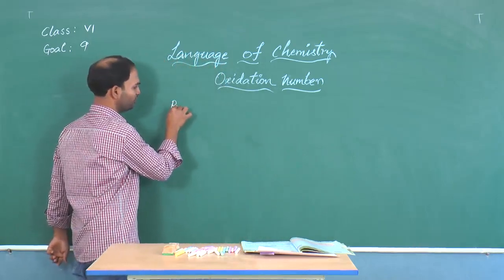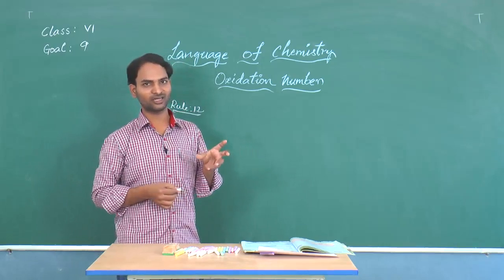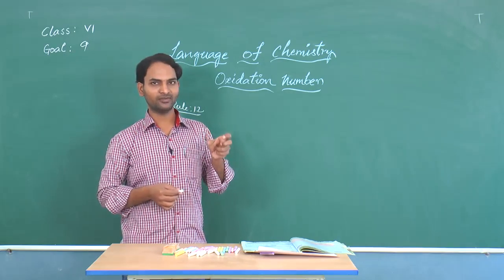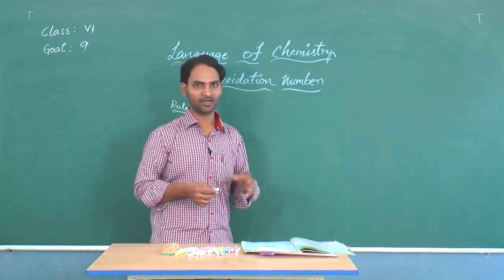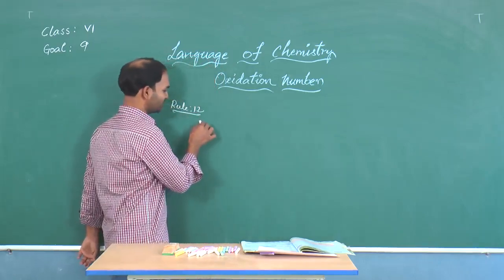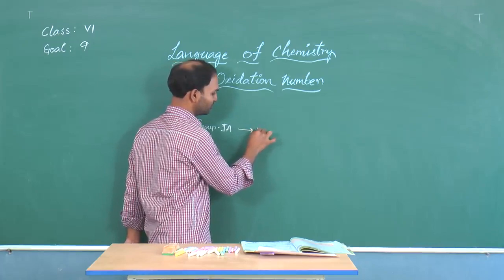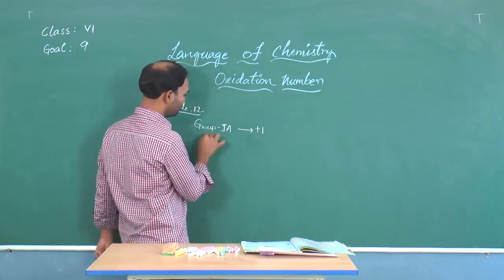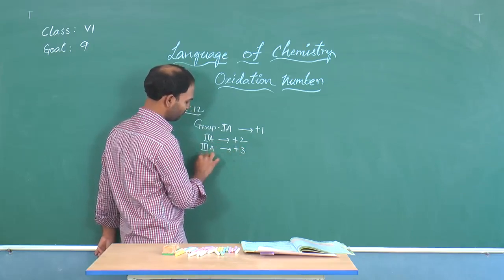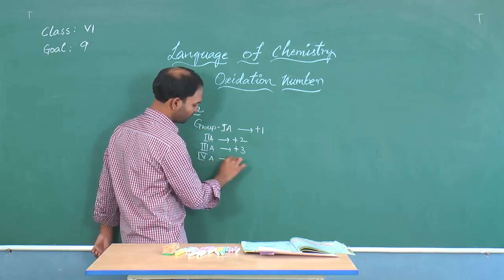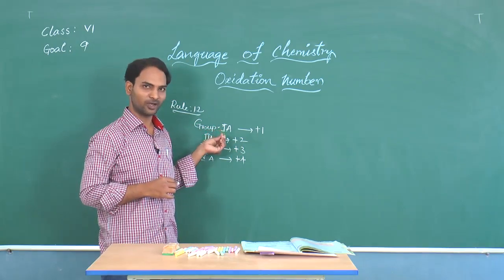In goal 9 we come across rule 12. Rule 12 states that the oxidation number for group elements equals their group number. Group 1 elements exhibit an oxidation state of +1, group 2A exhibits +2, group 3A exhibits +3, and group 4A exhibits +4. Up to group 4, the group number equals the oxidation number.